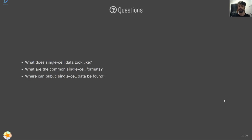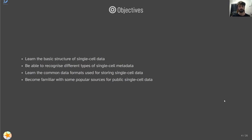The questions we'll be answering in this lecture are: what does single cell data look like, what are the common formats for storing single cell data, and where we can find public single cell data on the internet. At the end of this lecture we should understand the basic structure of single cell data, be able to recognize different types and formats of single cell metadata, learn the common data formats used for storing it, and become familiar with some popular sources for finding public single cell data.